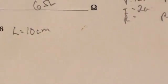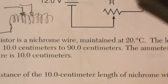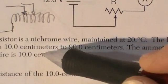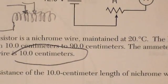What do we know about this nichrome wire? Well, we know the length of nichrome wire is 10 centimeters. Now, they told us a lot of information about that nichrome wire. It goes from 10 to 90. But really, right now, they're just isolating the 10 centimeter section of the wire. So that's all we know about is just that section. So we're going to stay with that.